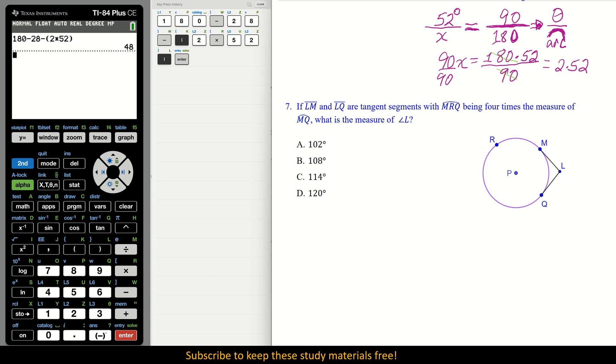If LM and LQ, segment LM, LQ, are tangent segments to the arc of, let me use, let's highlight. They're talking M, R to Q. That's where your tangency is. Being 4 times the measure of, let's use our yellow, of this one. So the green, now, think this out. The green is 4 times the measure of the yellow.